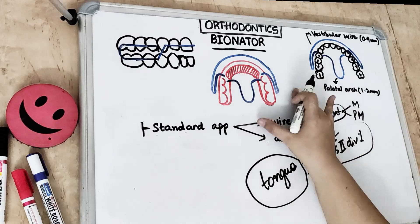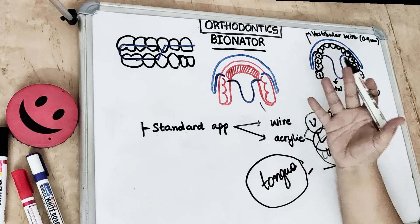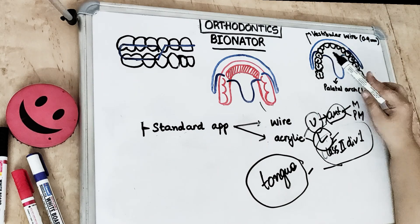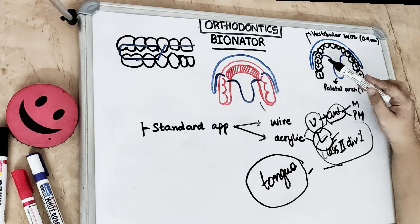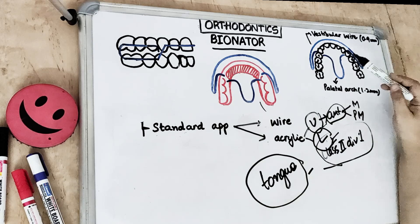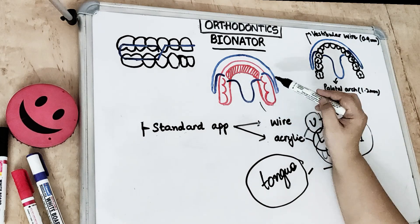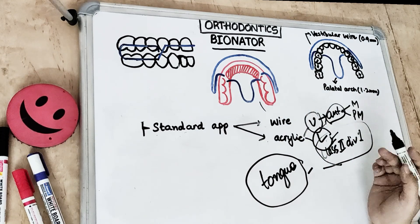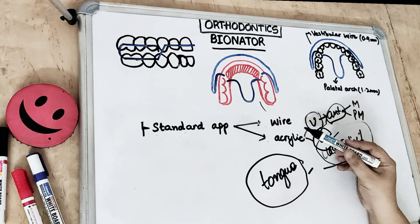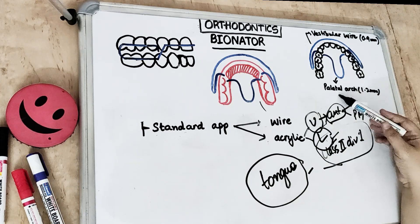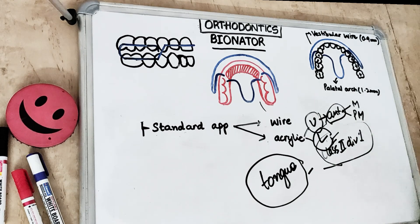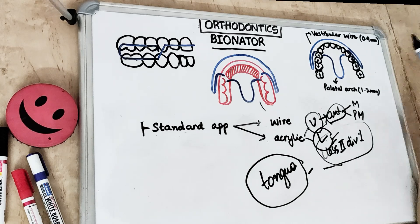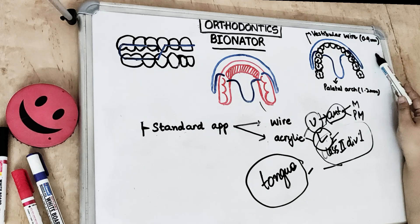In the maxilla, the acrylic covers only the premolars and molars, while in the mandible it covers the lingual surfaces of the anterior teeth — the lingual aspect of the mandibular arch. The wire component has two parts: the palatal arch, made up of 1.2 mm wire, and the vestibular wire, made up of 0.9 mm wire.